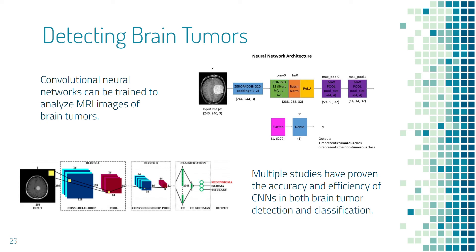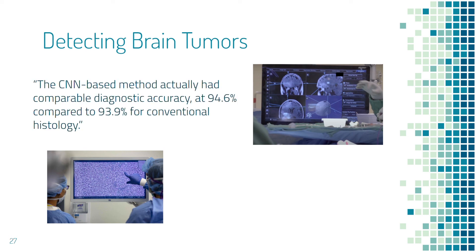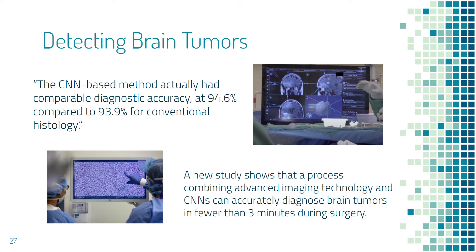For example, in the lower diagram the network classifies the tumor as meningioma, glioma, or pituitary. In one recent study, a convolutional neural network was trained with images of common brain tumor types. Two samples were taken from each patient — one was processed normally and sent to a pathologist for diagnosis, while the other was photographed with new imaging technology and given to the neural network. The results show that the neural network method was actually slightly more accurate than the regular diagnosis. With a combination of neural networks and advanced imaging techniques, the researchers were able to accurately diagnose brain tumors in less than three minutes. Many research teams are aiming to design a method that can classify an accurately located tumor in real time during brain surgery, so this study proved that using CNNs to detect tumors was a good approach.